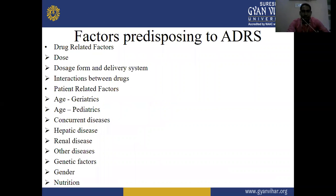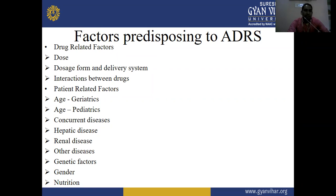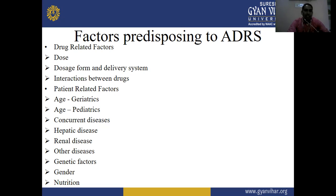Next, factors predisposing to adverse drug reactions. First are drug-related factors: dose, dosage form and delivery system. Dosage forms include oral and liquid forms; delivery systems include routes of administration — oral, parenteral, and intradermal. Drug–drug interactions are also included as drug-related factors.